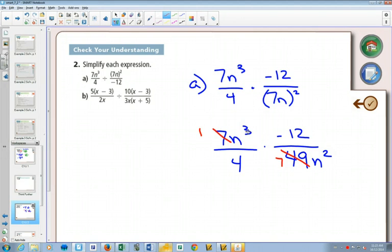12 over 4, that simplifies to be negative 3. So we'd have negative 3 over 1. I could simplify the n's too, but I think I'm going to write things out. Otherwise, we're going to have too many lines and get confused.